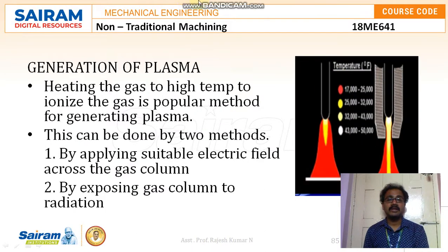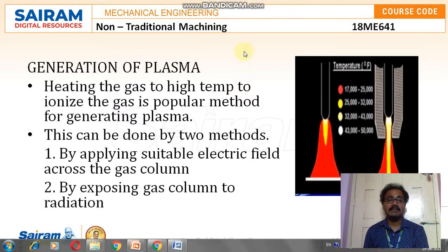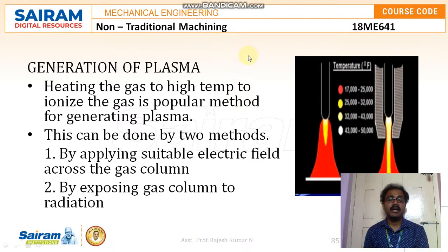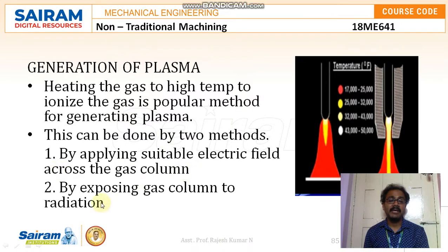Moving to the generation of plasma — heating the gas to high temperature to ionize the gases is the popular method for generating plasma. This can be done by two methods: by applying a suitable electric field across the gas column, or by exposing the gas column to radiation.